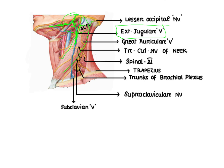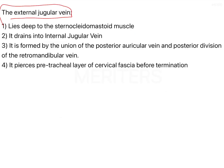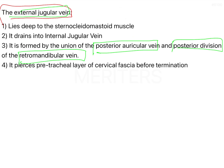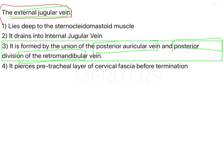The external jugular vein ultimately drains into the subclavian vein. Coming back to the question: the external jugular vein forms near the angle of the mandible, where the posterior branch of the retromandibular vein and the posterior auricular vein join and descend through the neck superficially. So the answer is option 3 — it is formed by the posterior auricular vein and the posterior division of the retromandibular vein.